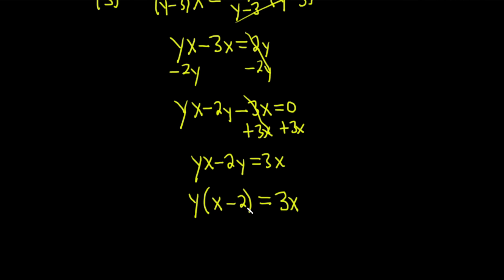And again, we're looking for y. It's being multiplied by all of this, by x minus 2. So to undo that, we do the opposite of multiplication, which is division. So we divide both sides by x minus 2. Divide by x minus 2. So we get y = 3x/(x-2).